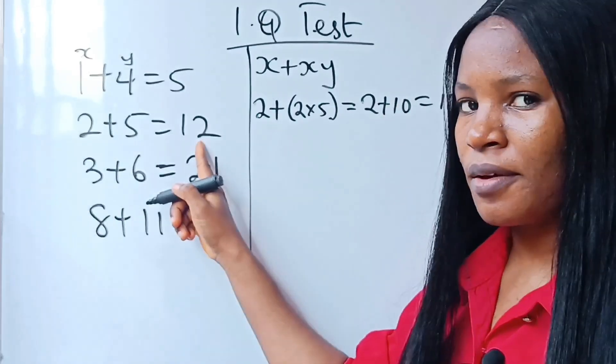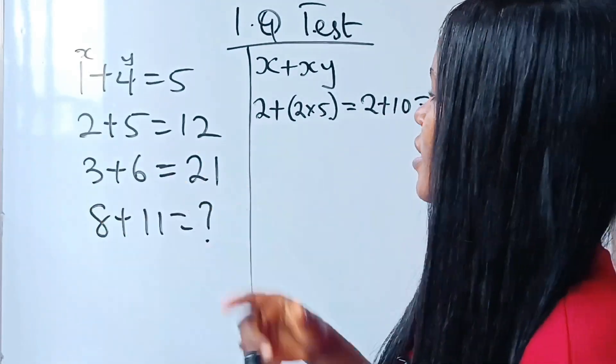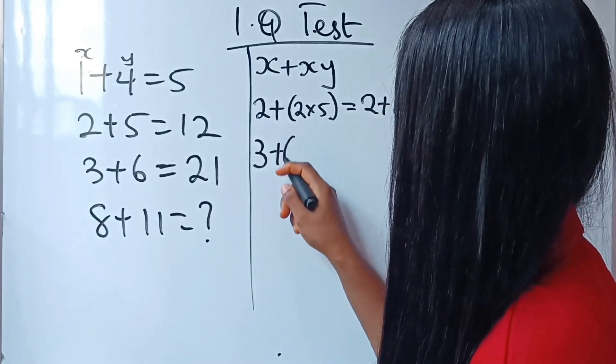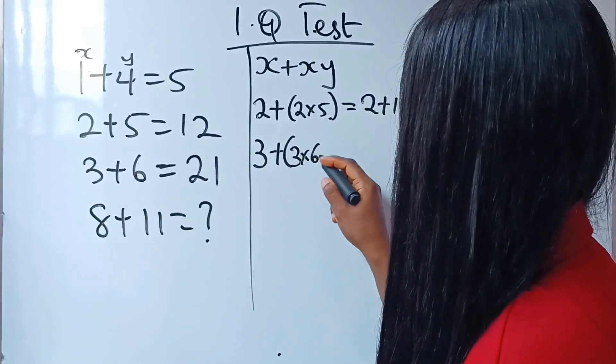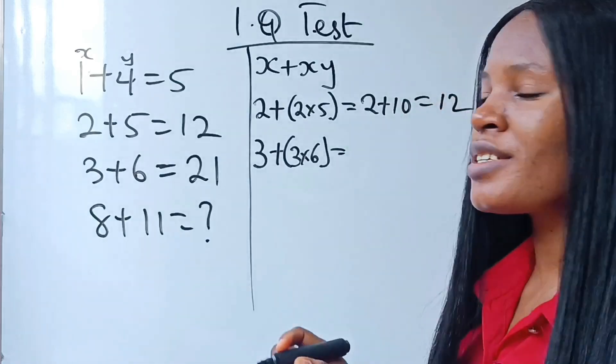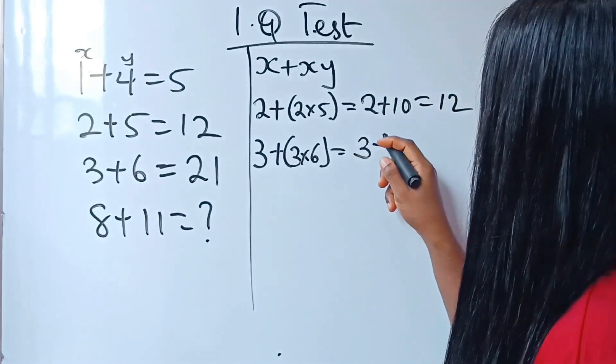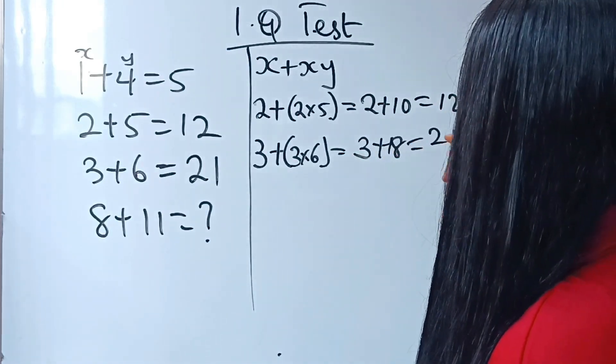And that is what is here. And the third is what? 3 plus 3 times 6, right? Which is equal to 3 plus 18, which is 21.